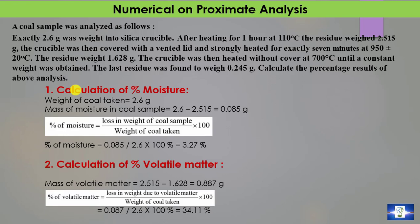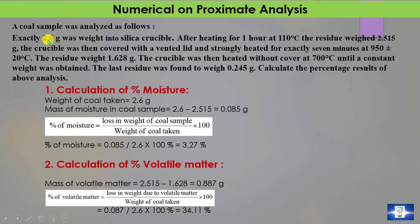In proximate analysis, we calculate moisture, volatile matter, ash, and fixed carbon. First, we calculate percentage moisture. The weight of coal taken is 2.6 grams. After heating at 110°C, the residue weighs 2.515 grams. So the mass of moisture is 2.6 − 2.515 = 0.085 grams. Percentage moisture equals loss in weight divided by weight of coal taken (2.6 grams), giving 3.27%. This moisture is inherent moisture because the sample is in air-dried condition.